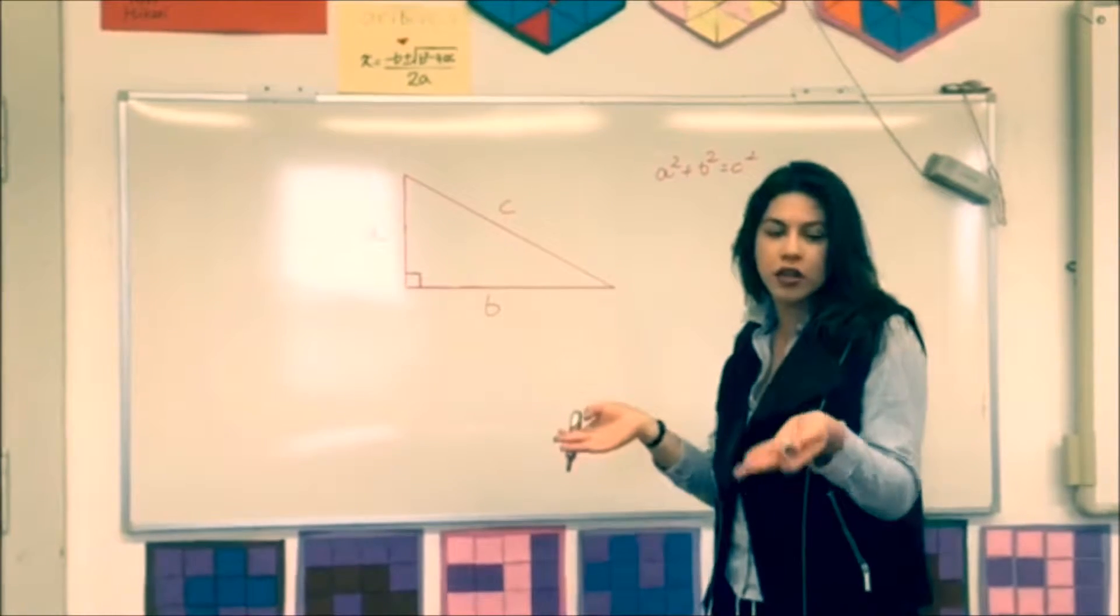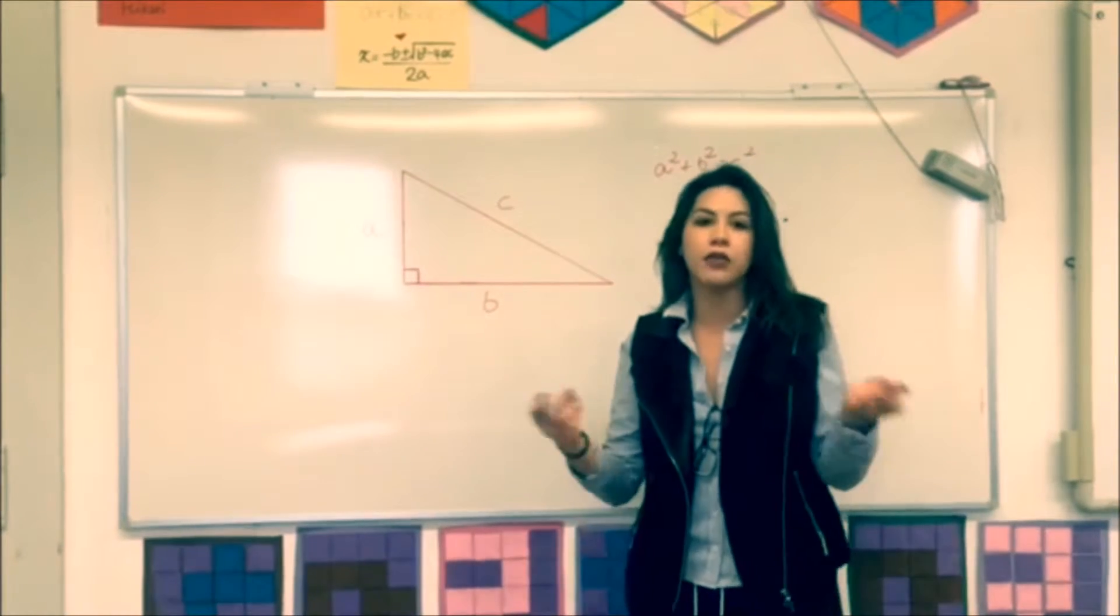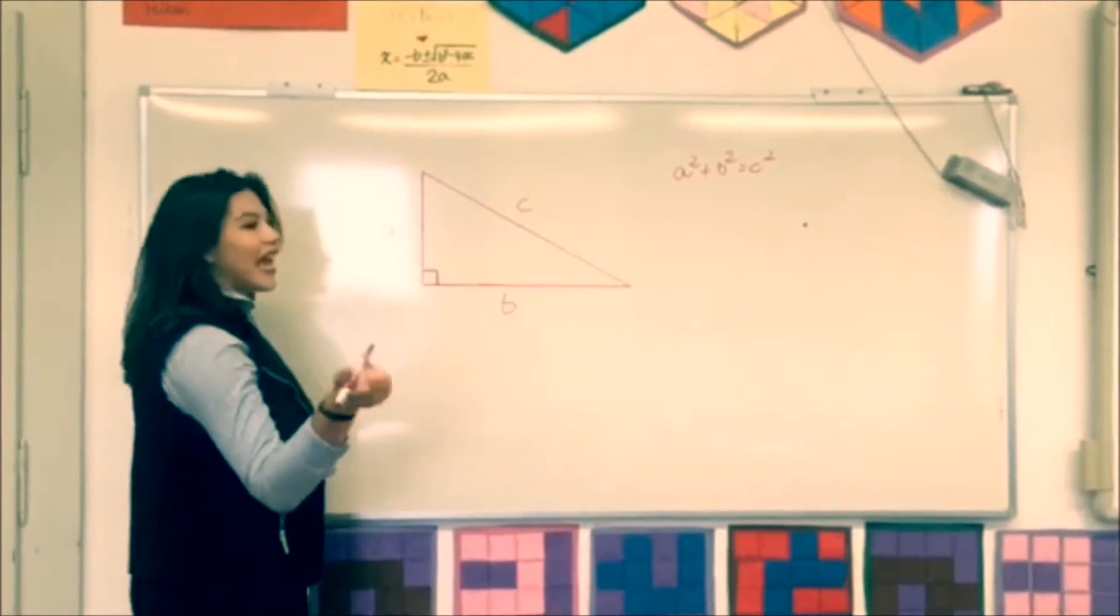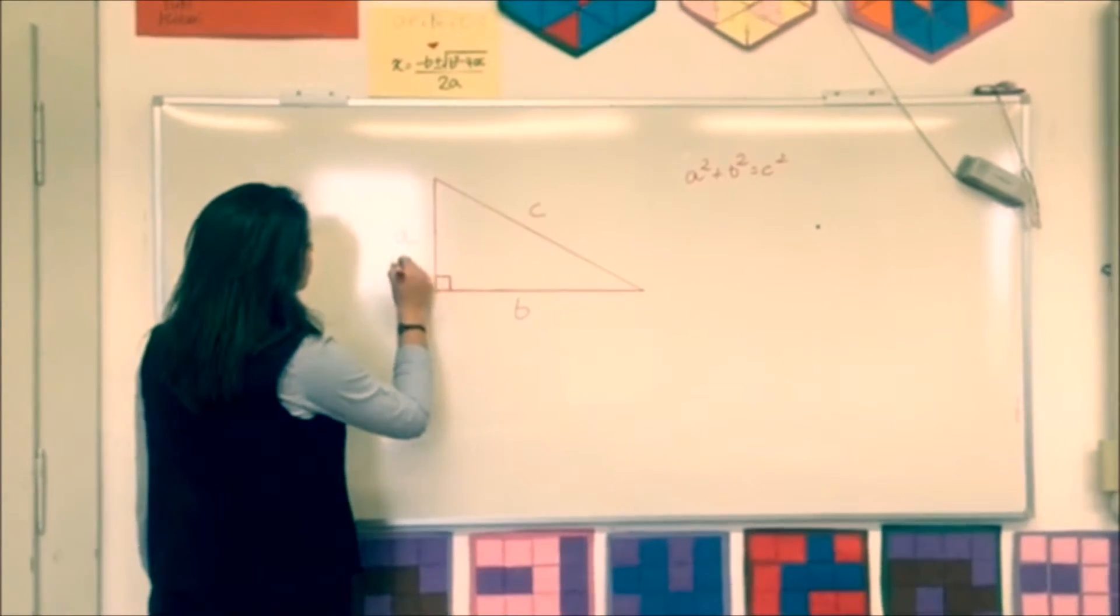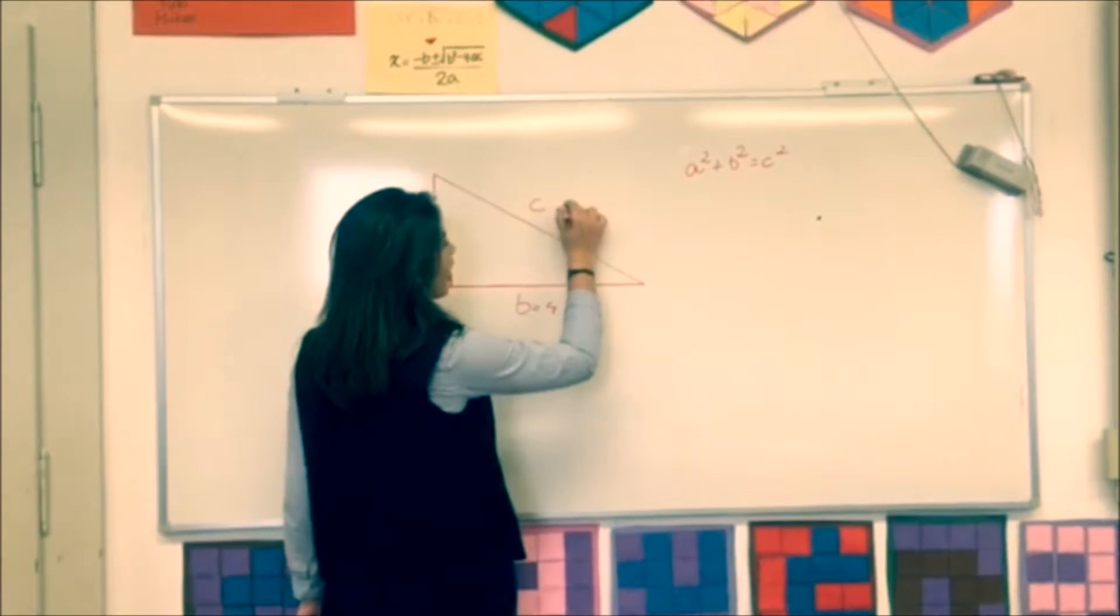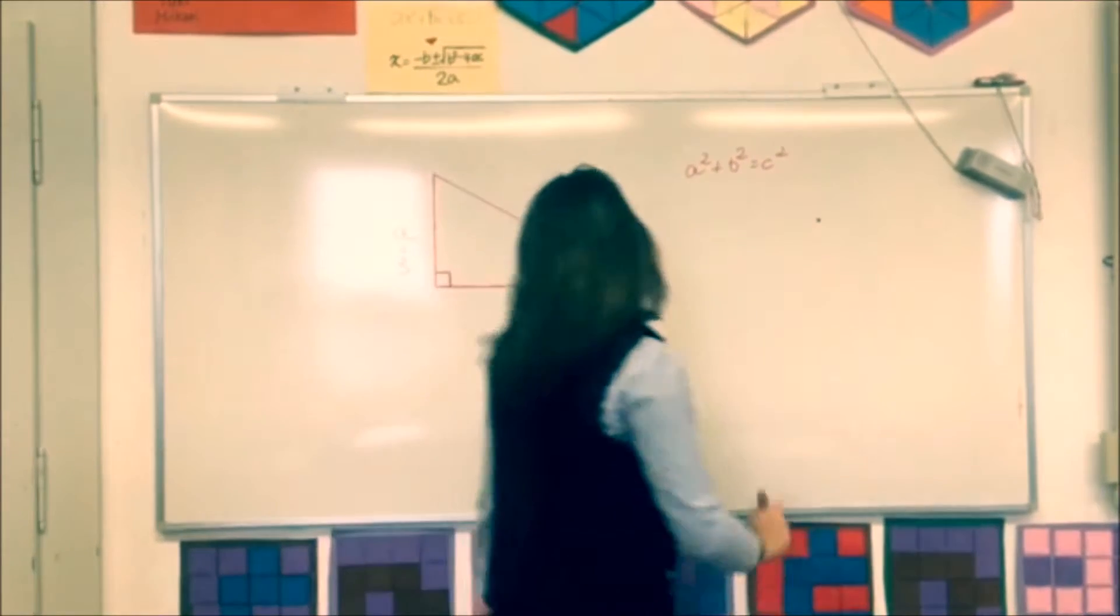Let's do an equation so I can explain better how to solve the Pythagoras theorem. Let's suppose that A equals 3 and B equals 4, and we want to find the value of C.